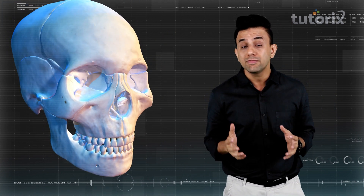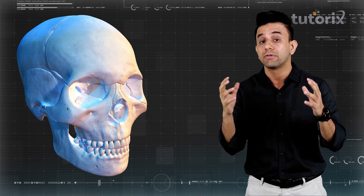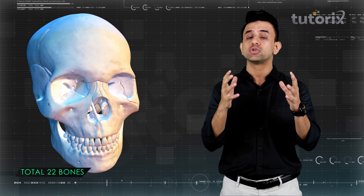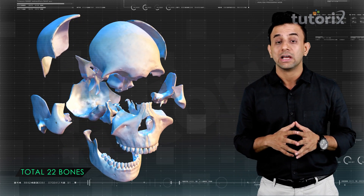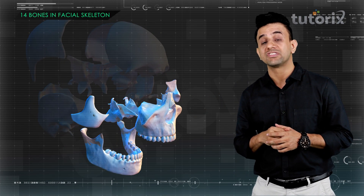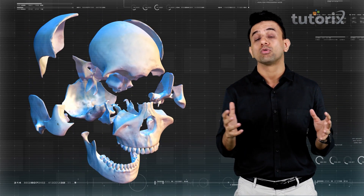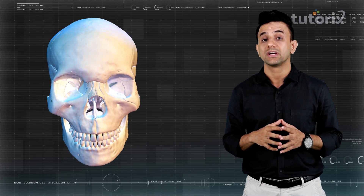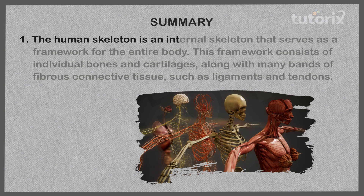We have now covered all 22 bones present in the skull: eight bones in the cranium and 14 bones in the facial skeleton. Let's now summarize the important points from this session.